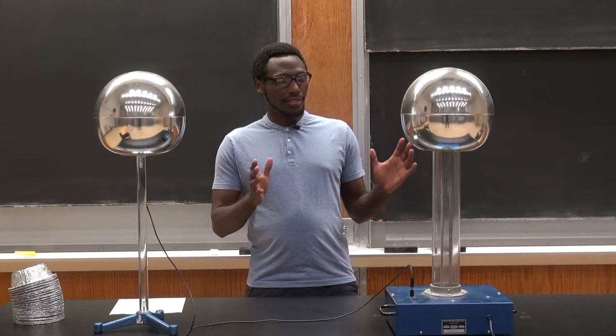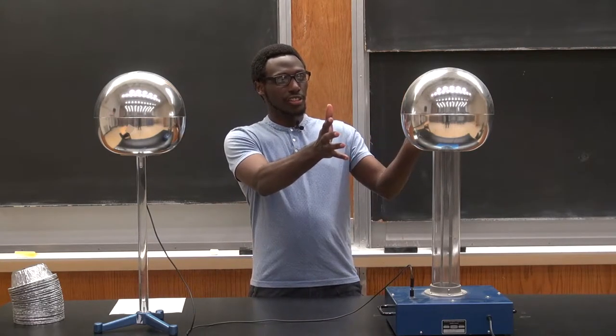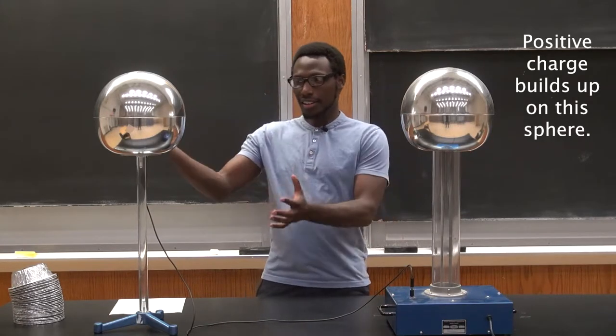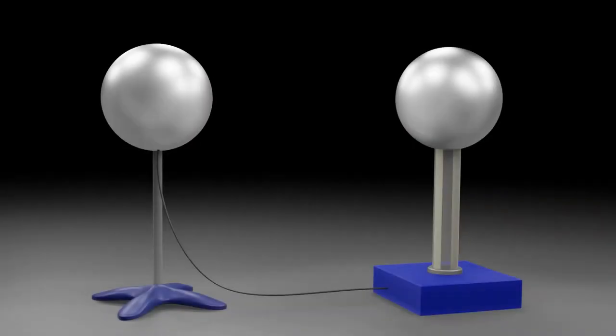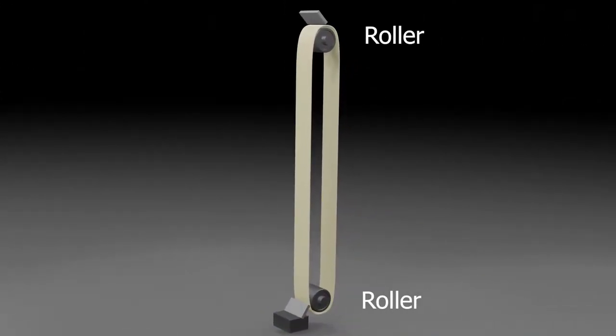A Van de Graaff generator is made of two main parts, a sphere that charges up to a positive charge and another sphere that's connected to ground. The belt inside the Van de Graaff generator rolls on two rollers, one in the dome and one in the base.